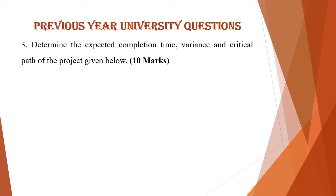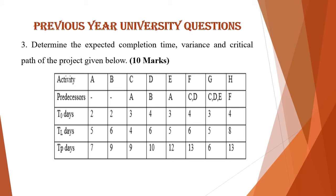The third question is a numerical problem: determine the expected completion time, variance and critical path of the project given below, which is asked for 10 marks. Here the data given includes the activities, their predecessor relationships, and TO, TL and TP — that is, the optimistic time, most likely time and pessimistic time. You have to estimate the expected time, variance and critical path of the project.